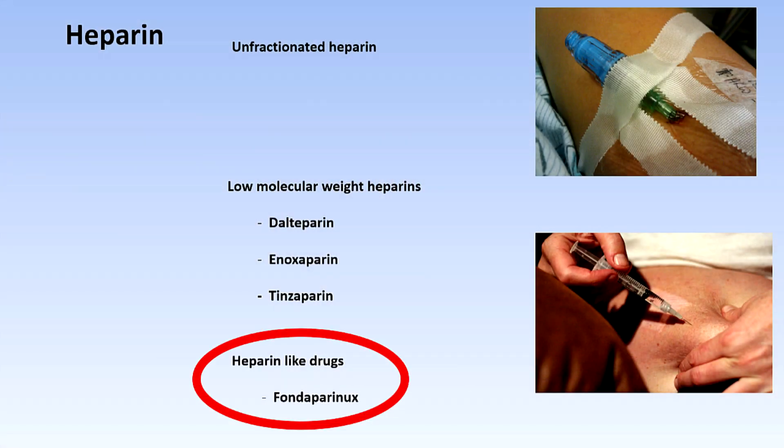In the UK, almost all patients in hospitals are given some form of low molecular weight heparin — whether it's enoxaparin or dalteparin or something similar — and that's to prevent blood clots from forming in patients who are ill, dehydrated, and basically just sitting in bed all day long. There are other drugs as well, like fondaparinux, which is a synthetic drug that just uses the active site of heparin, and that's used in things like acute myocardial infarction.